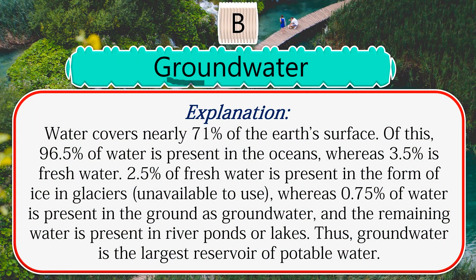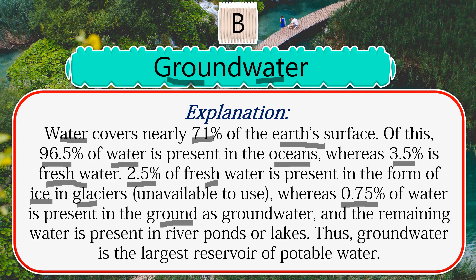The answer is groundwater. Water covers nearly 71% of Earth's surface. Of this, 96.5% is present in the ocean, whereas 3.5% is freshwater. About 2.5% of freshwater is present as ice in glaciers, whereas 0.75% is present in the ground as groundwater, and the remaining water is present in rivers, ponds, or lakes. Thus, groundwater is the largest reservoir of potable water.